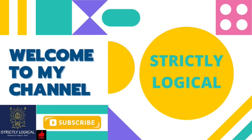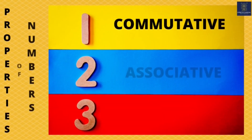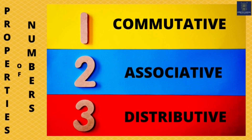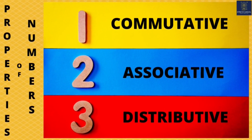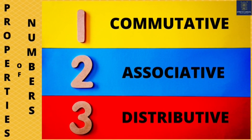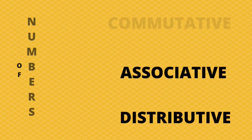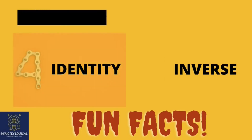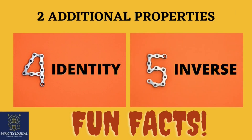Hello everyone, welcome back to my channel Strictly Logical. If you are new to my channel, please subscribe for more informative videos. In this video, I'm going to explain the five basic properties of numbers which will make your math sums very much easier. All these properties are applicable on whole numbers, natural numbers, rational numbers, integers, decimal fractions. The ideas behind these properties are very simple, and at the end I have some fun facts connected to these properties, so please stay tuned till the end.